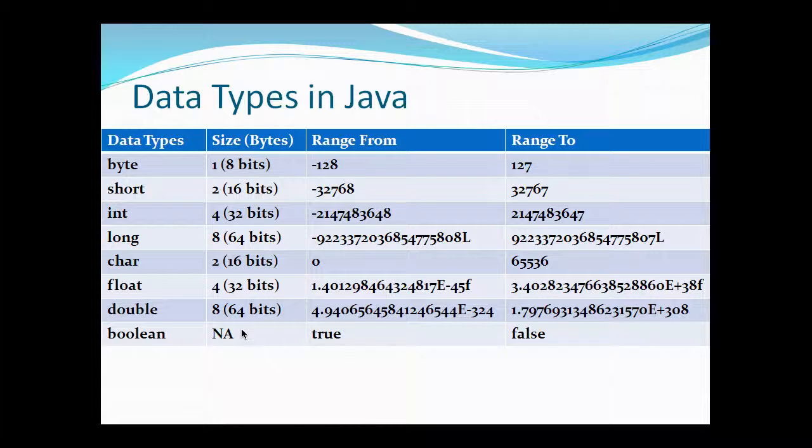Last, there is a boolean data type which is a special data type which doesn't have any applicable size. It holds only two literal values: true and false. Whenever you want to use conditions to check whether something is equal or not equal to something, we use the boolean data type which checks based on true or false values.